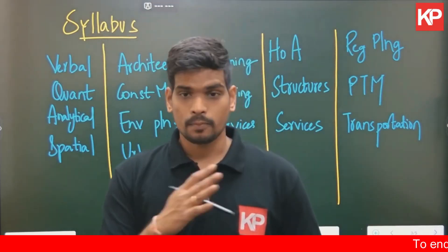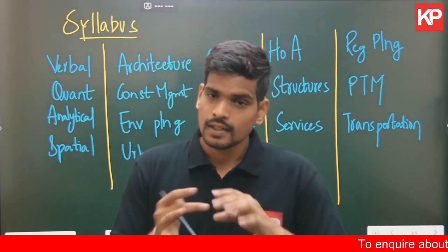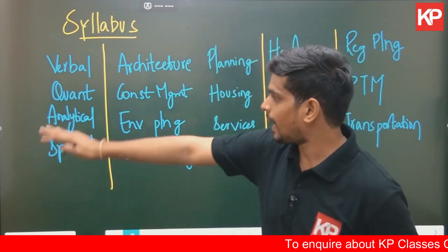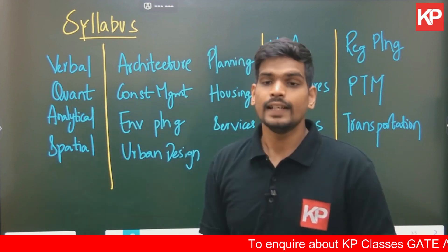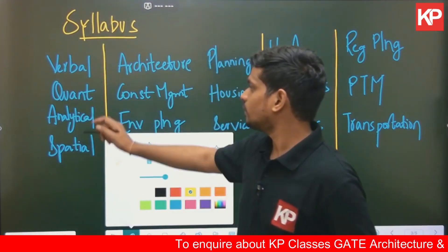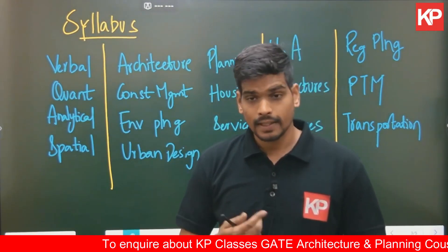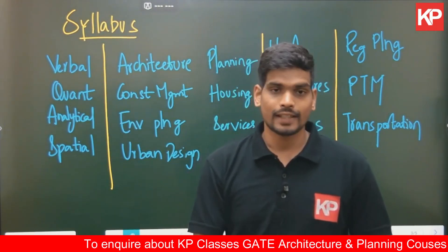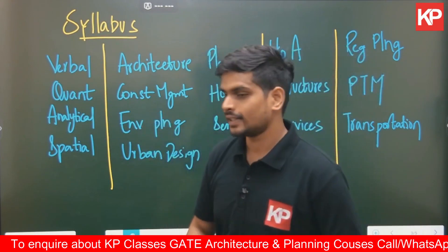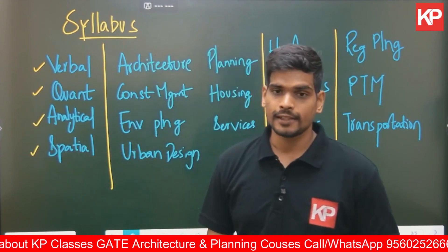Looking into the syllabus, there are basically three parts which you need to answer, but you can make a selection out of architecture and planning. Part one is a common part for everything — that is general aptitude. In the official syllabus published by GATE on the GATE portal, for general aptitude there are four parts: verbal ability, quantitative ability, analytical reasoning, and spatial reasoning.